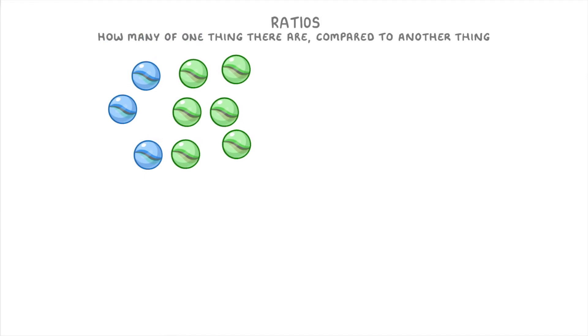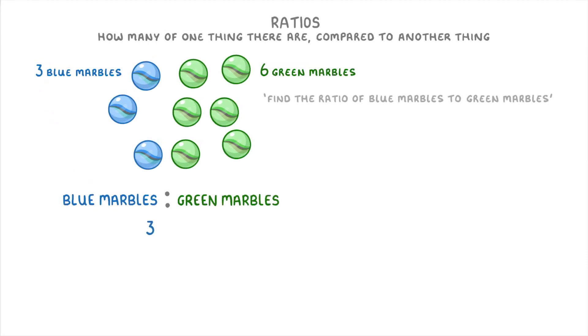For example, if we take this group of marbles, we can see that there are three blue marbles here on the left and six green marbles here on the right. So if we want to define the ratio of blue marbles to green marbles, which we could write as blue marbles colon green marbles, we'd write 3:6 because we have three blue marbles and six green marbles.